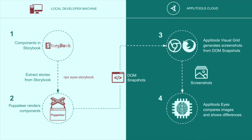Before we start our demo, let me show you how Applitools does UI testing for applications that are using Storybook. First of all, you start by writing the Storybook Stories. Then you install and run the Eyes SDK for Storybook. The SDK extracts the Storybook Stories, uses Puppeteer to render the components. Then the client-side API of the Eyes SDK generates DOM snapshots for all the components and uploads them to the Applitools back-end servers.